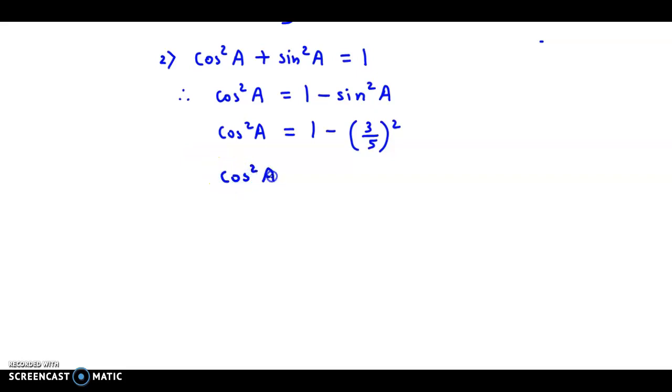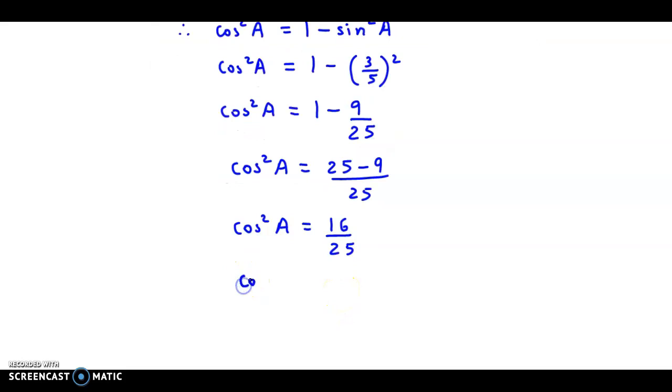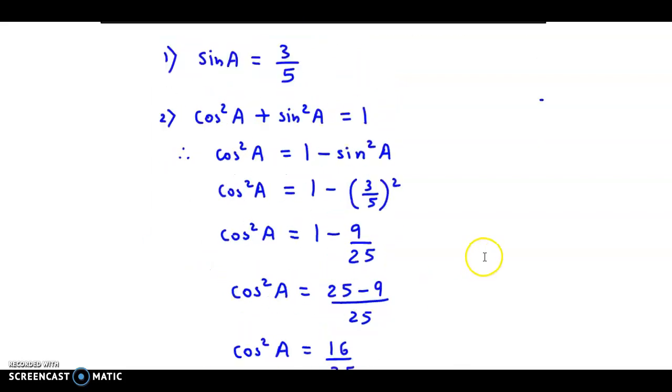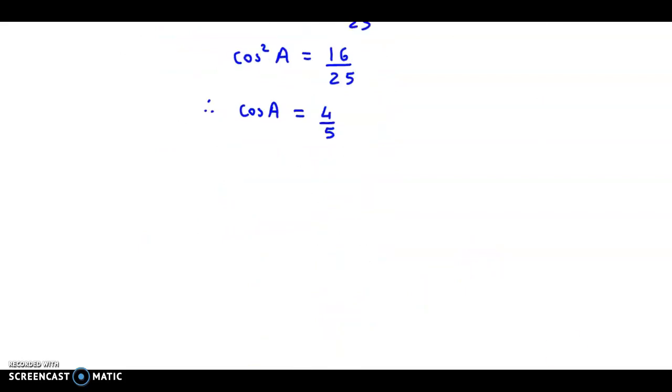So, we have cos square A is equal to 1 minus 9 by 25. Now, equalizing the denominator, we get cos square A is equal to 25 minus 9 divided by 25. So, we have cos square A is equal to 16 by 25. If we take the square root, we obtain cos A equal to 4 by 5. So, we have sin A equal to 3 by 5 and cos A is equal to 4 by 5.